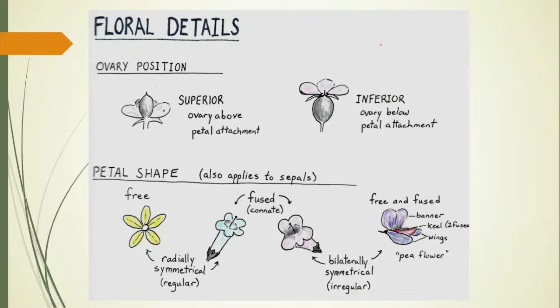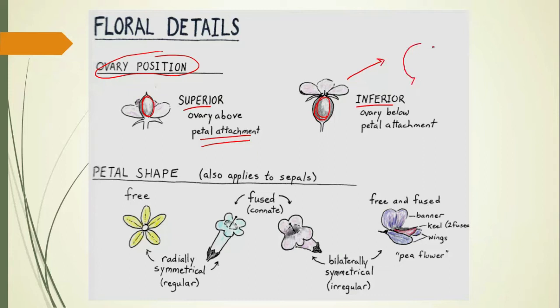Besides the number of petals, sepals, and stamens, another important thing to note is the ovary position — where that is relative to where the petals attach. If the ovary is above where the petals and sepals attach, we call it superior. If the ovary is below that attachment point, then it's inferior. Sometimes you'll see that even in the fruit. Like if this flower were to develop into something like a blueberry, we might find the old sepals up at the very top, telling us that was an inferior ovary.